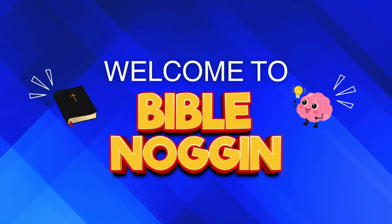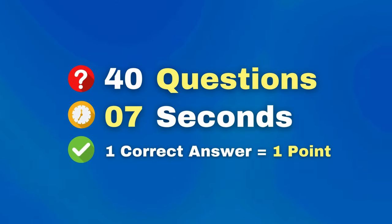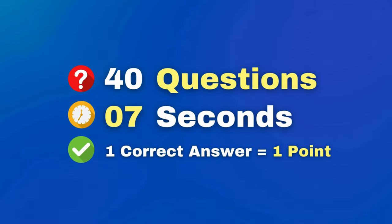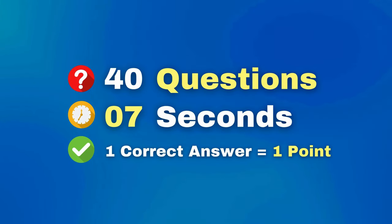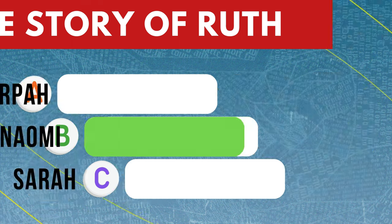Welcome to Bible Noggin! We have another Bible quiz for you with 40 questions. You have seven seconds to answer each question. One correct answer equals one point. Questions will increase in difficulty as we go through the quiz. We are focusing on the story of Ruth.